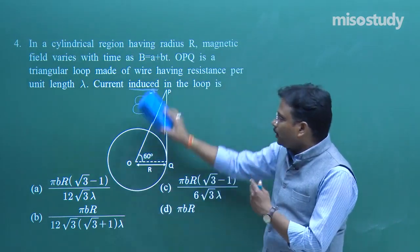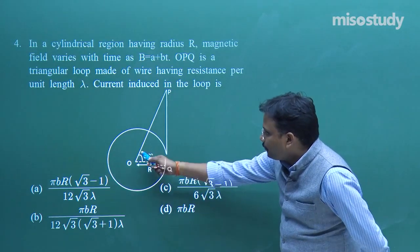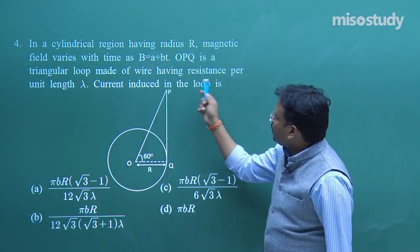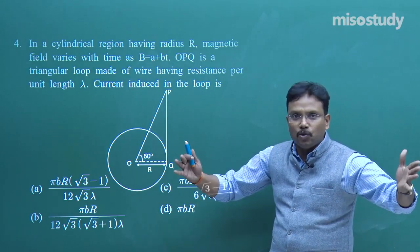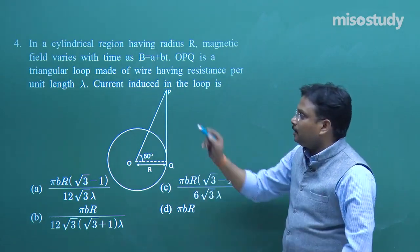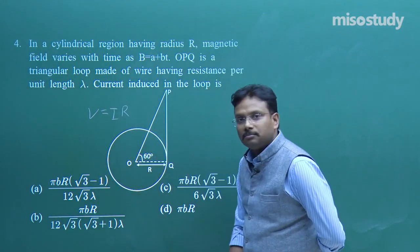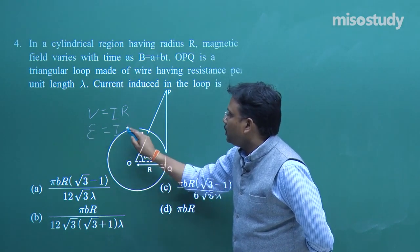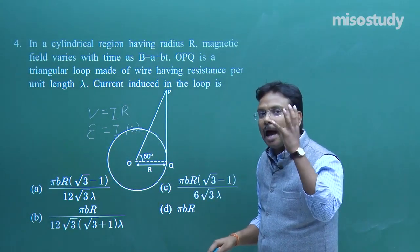Since resistance per unit length is λ, if the total perimeter of the wire is, say, 10 units, then total resistance = 10λ. Then from V = IR: ε_induced = I × (total resistance), so I = ε / (total resistance in terms of λ). This will be our approach for this problem.